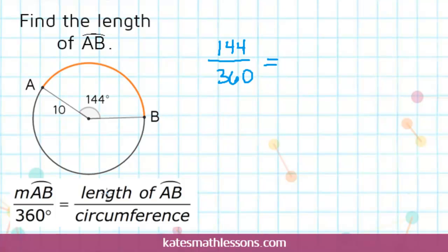We know that that fraction is going to be equal to the fraction of the length of the arc, how long that arc is, the distance, divided by the total distance around the circle. That's the circumference. We don't know the length of the arc. That's what we're trying to find. So we can put an x there.